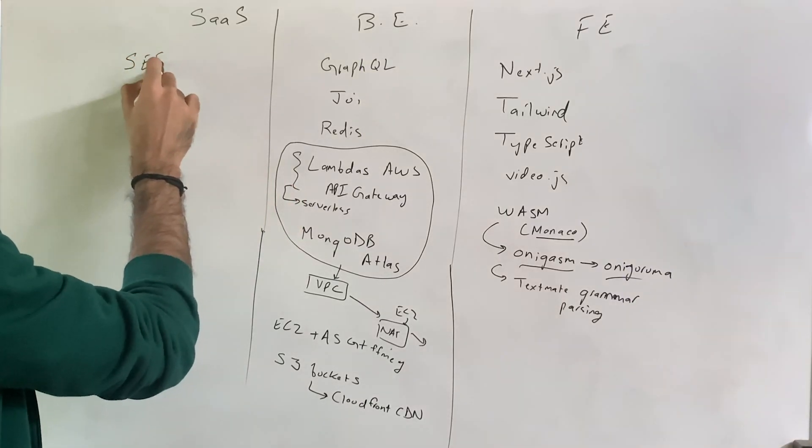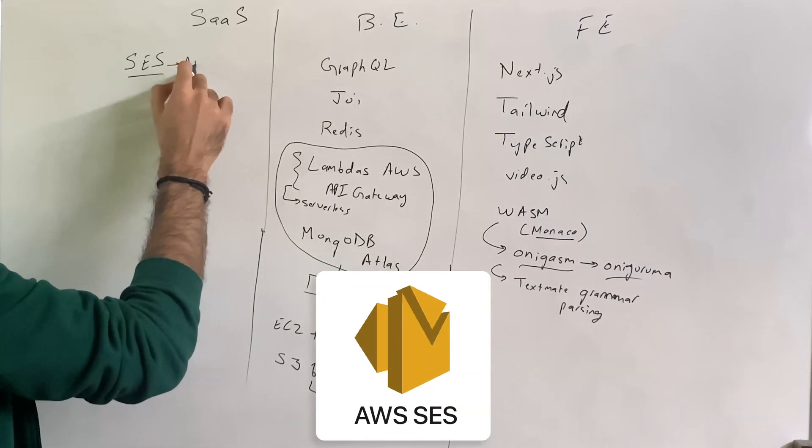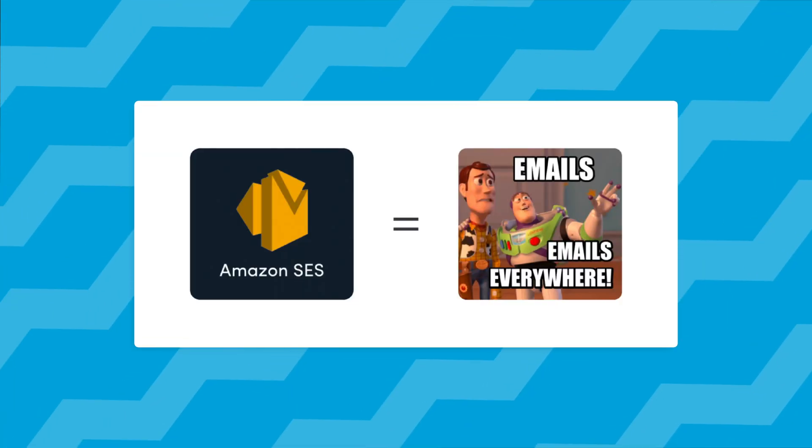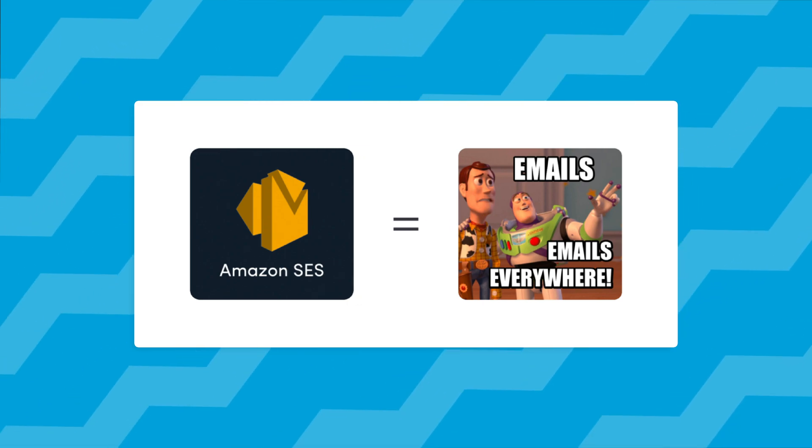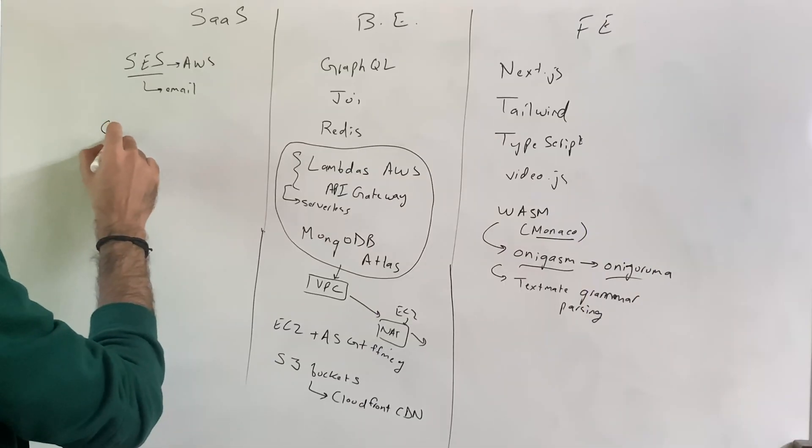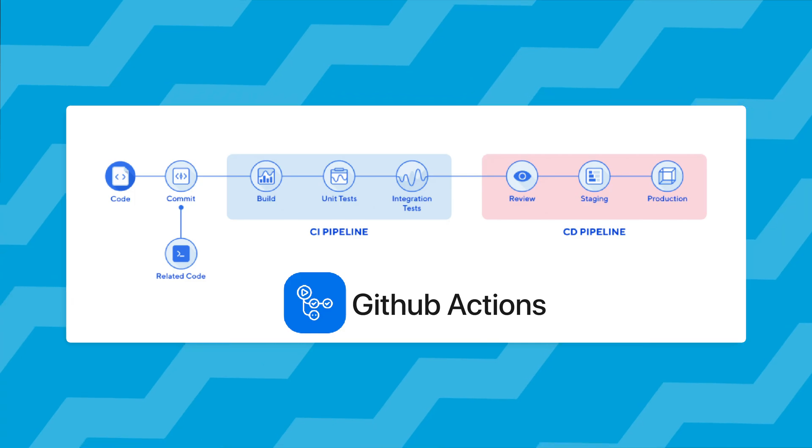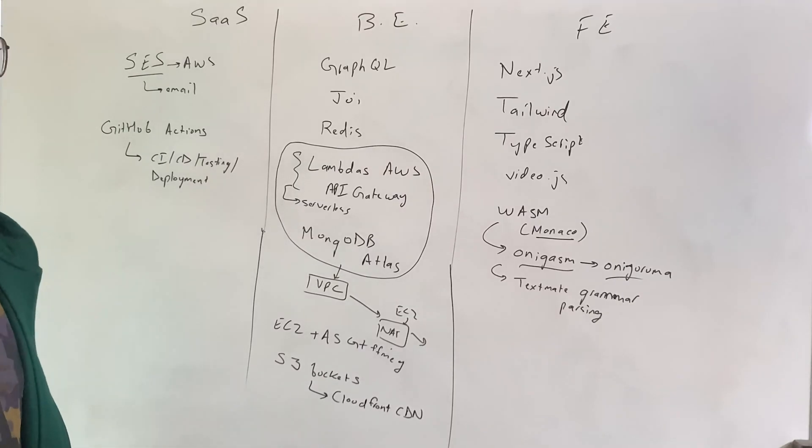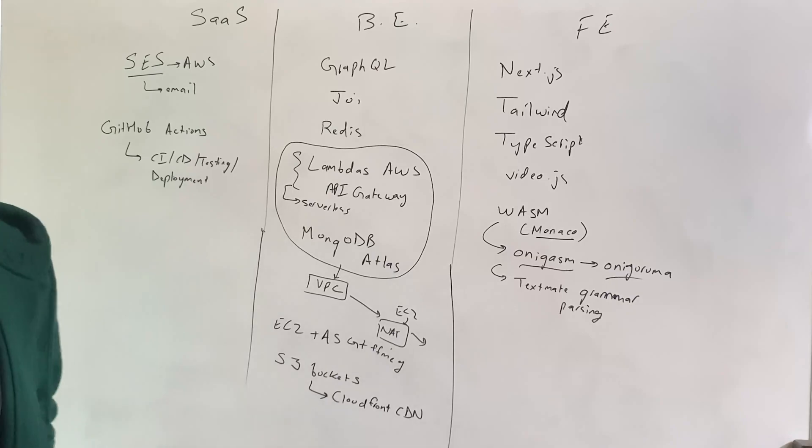For the SaaS side, the most relevant tool we use is SES from AWS, which is Simple Email Service. You can use it to programmatically send tens of thousands of emails, even hundreds of thousands, depending on the limit AWS sets for you. This is a really important part of our business. We use a lot of GitHub and GitHub Actions for our CI/CD, testing, and even deployment. You want your workflows to be available in a way where you don't have to do a lot of work with the infrastructure all the time. Infrastructure as code deployment using GitHub Actions is really helpful.